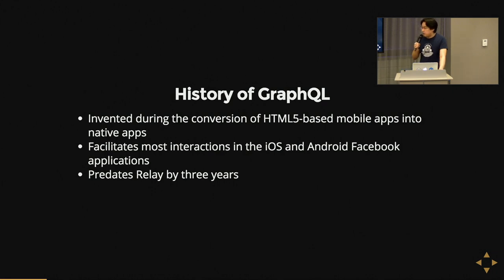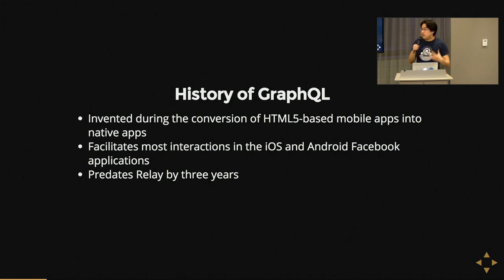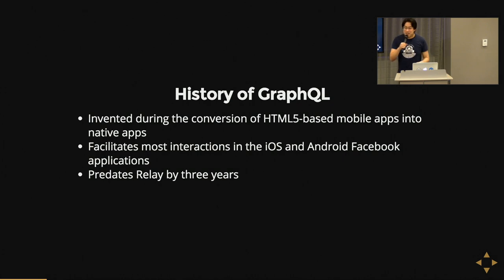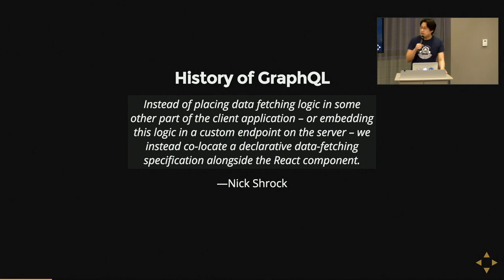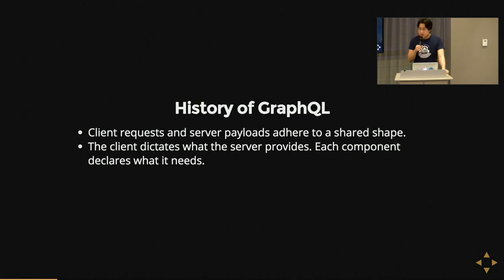Facebook realized while creating its HTML5-based mobile apps and converting them to iOS and Objective-C powered apps that they needed a way to intelligently get data from the client side. React and Relay are actually innovations that came about after GraphQL — GraphQL has been in use at Facebook for a while. If you've used the Facebook application on your iPhone or Android, you've been sending and submitting GraphQL queries. Nick Schrock, the creator of GraphQL, says: instead of placing data-fetching logic in some other part of the client or embedding it in a custom endpoint on the server, we co-locate a declarative data-fetching specification alongside the React component.